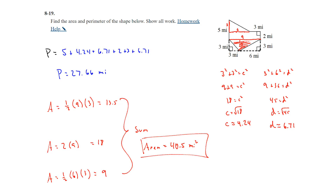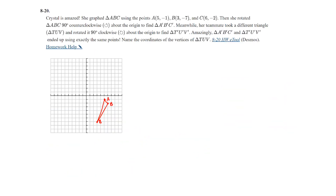That finds both the area and perimeter. Question 20: Crystal graphed triangle ABC using points A, B, and C, then rotated triangle ABC 90 degrees counterclockwise about the origin to find A prime, B prime, and C prime. I already have the points plotted, so now we rotate counterclockwise 90 degrees.